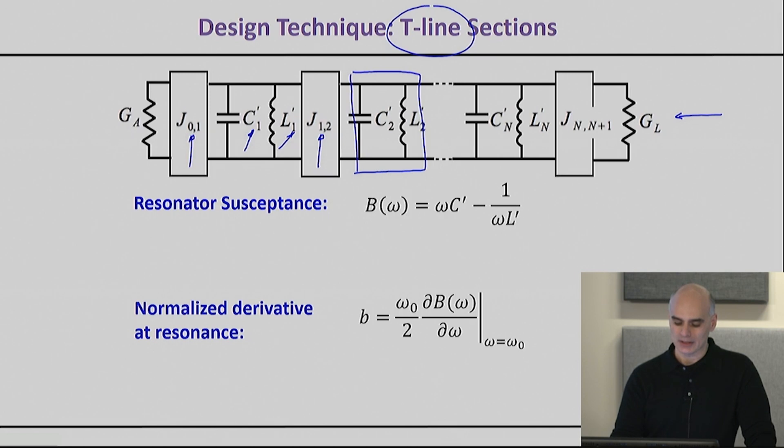The way we solve this problem is by considering the resonator's susceptance shown here as B. It's slightly more convenient to actually consider the normalized derivative at resonance. For every single resonator that you can design, you can compute this number here, or simulate it or measure it.